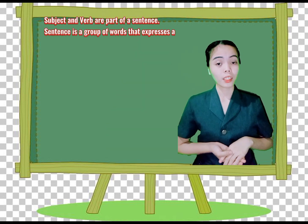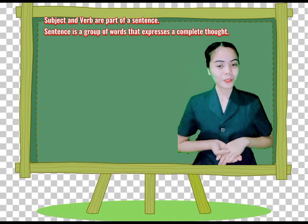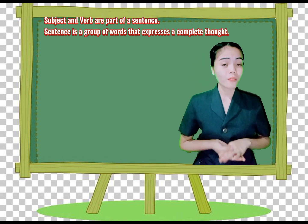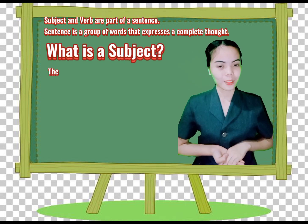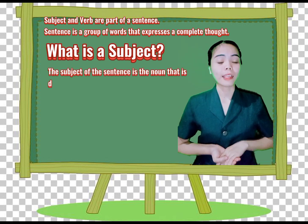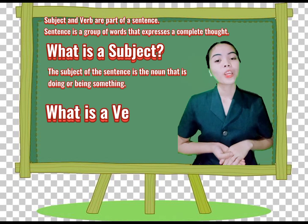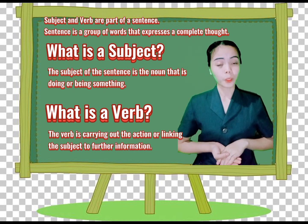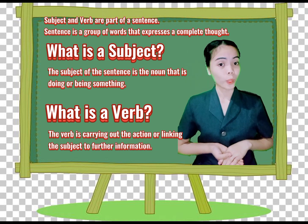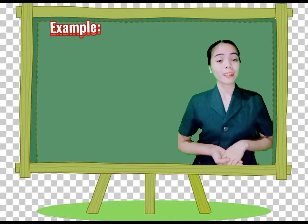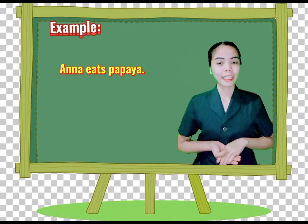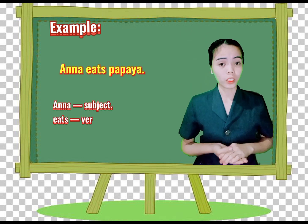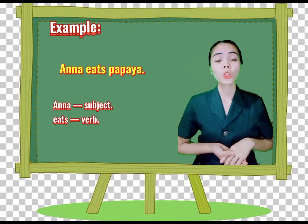Today we will be discussing subject-verb agreement. Subject and verb are parts of a sentence. A sentence is a group of words that expresses a complete thought. The subject of the sentence is the noun that is doing or being something. The verb carries out the action or links the subject to further information. Example: 'Anna eats papaya.' In this sentence, 'Anna' is our subject and 'eats' is our verb.